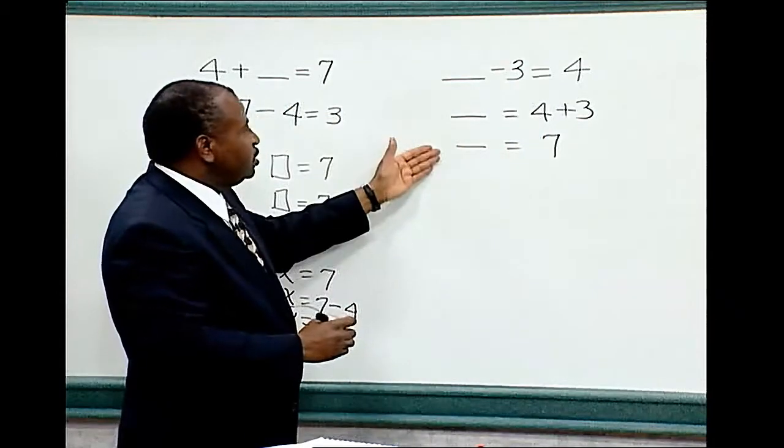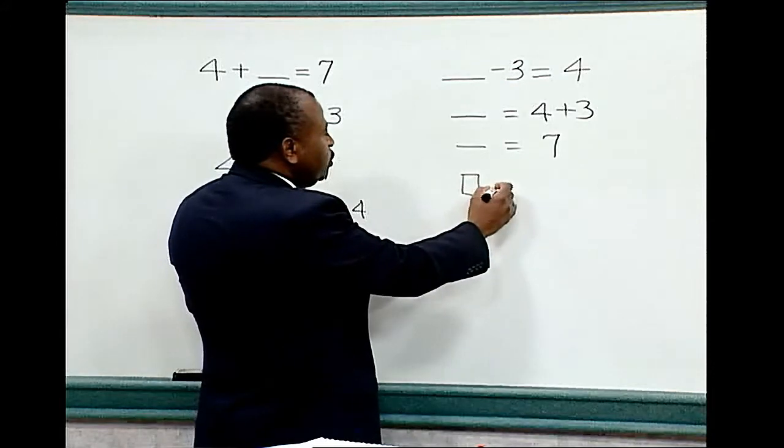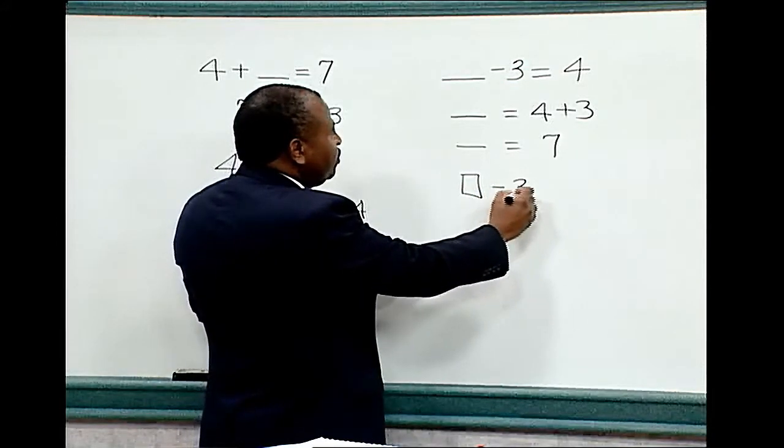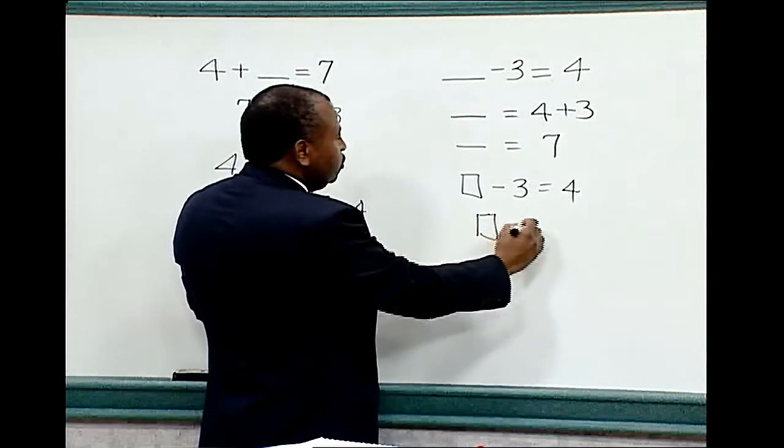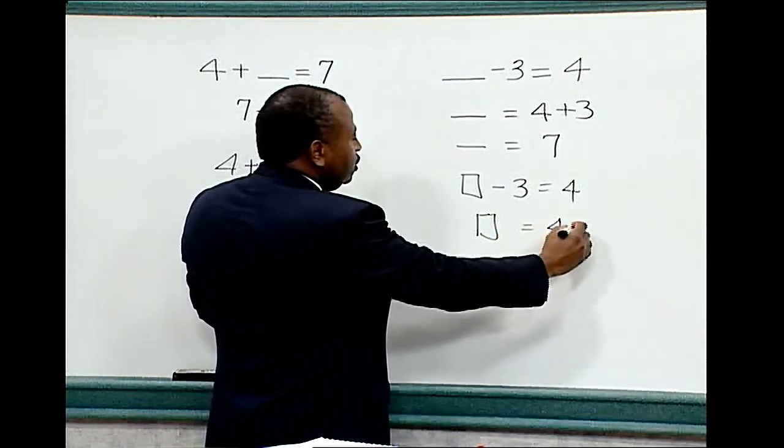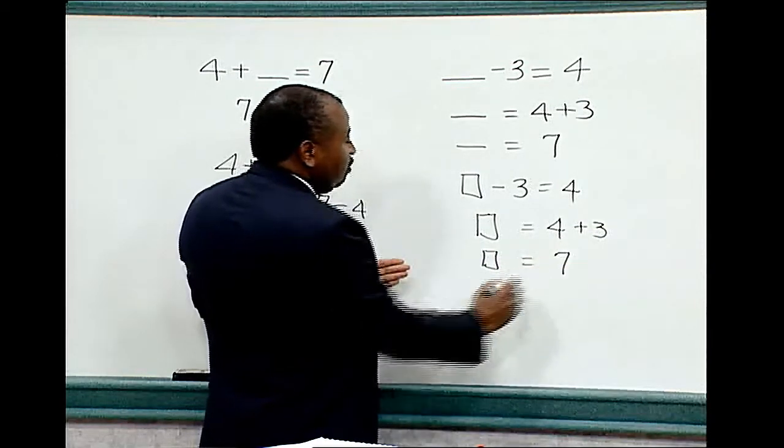We can extend this lesson by adding a box. What number when replaced with the box and taken away 3 equals 4? Box would equal 4 plus 3. Box equals 7.